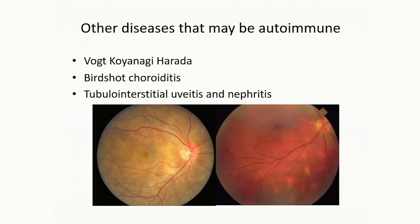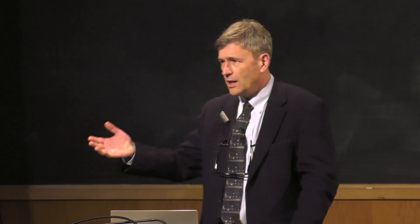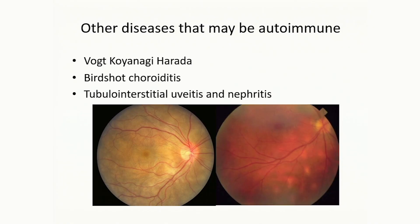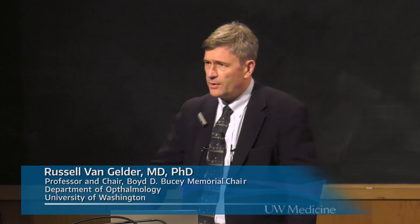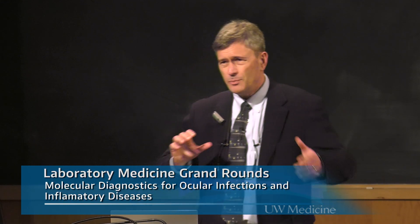Birdshot choroiditis is another very rare disease, shown here as little yellow spots in the back of the eye — a retinitis. It has among the highest HLA associations of any disease; essentially 100% of patients with birdshot are HLA-A29 positive. The antigen is not known, but it's a bilaterally symmetric, highly HLA-linked disease. Another interesting autoimmune disease is tubulo-interstitial nephritis and uveitis syndrome — TINU — incredibly highly linked to an HLA-DR locus with a relative risk of about 150, causing mostly in kids an acute interstitial nephritis and uveitis.